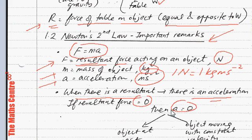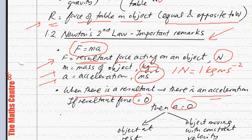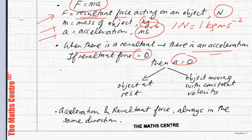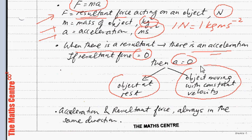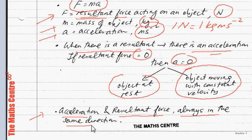There are two cases where acceleration can be zero: when the object is stationary, or when the object is moving with uniform or constant velocity. Make sure you know these facts. Another very important idea: acceleration and resultant force always act in the same direction.